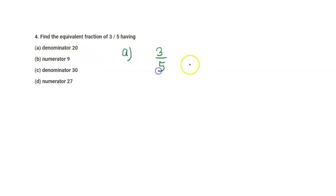The fraction is 3/5 and its denominator equals 20. What multiple of 5 gives 20? It is 4. 5 times 4 is 20, so 3 times 4 is 12.